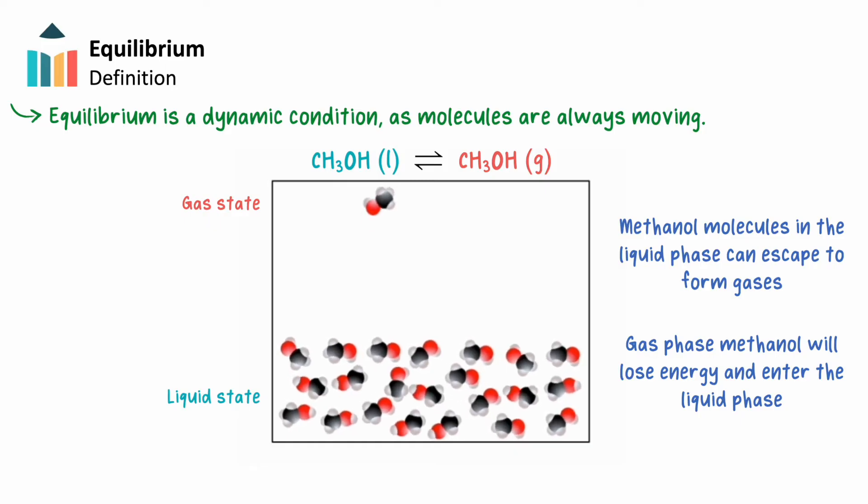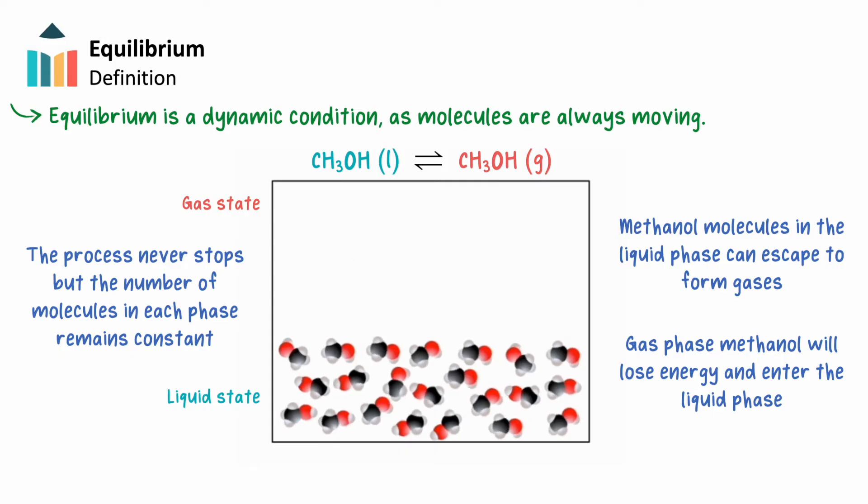As this process proceeds, and if the system remains closed, the rate at which the liquid methanol molecules vaporize to the gas phase will equal the rate at which gaseous methanol molecules condense back into the liquid phase. The vaporization and condensation process never stops, but the number of molecules in the liquid and gas phases will remain constant.